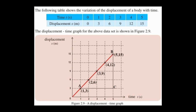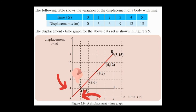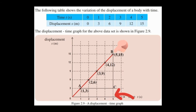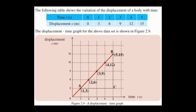Now let's consider point A. Here, you can observe that if the time is equal to 1 second, then the displacement is equal to 3 meters. Now let's consider another point — point B. At that point, if the time is equal to 5 seconds, then the displacement of the car is equal to 15 meters. I hope that you have understood this part.